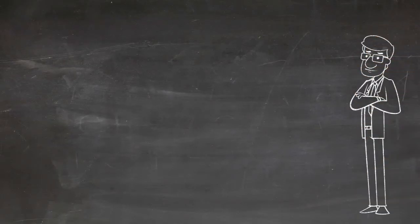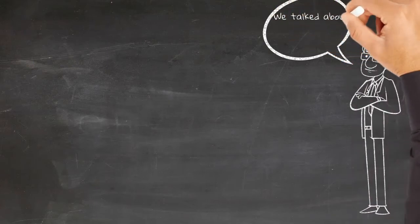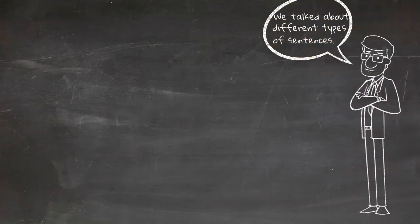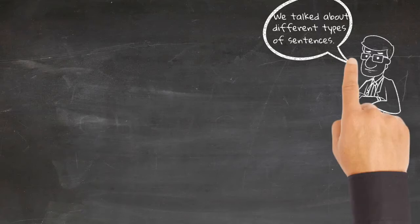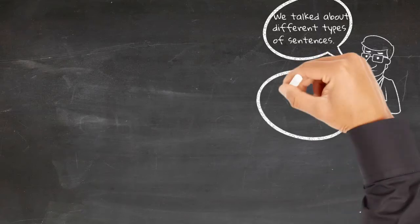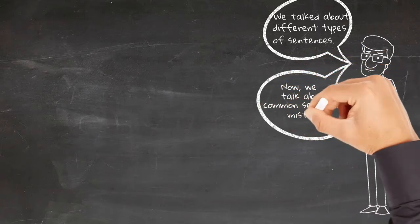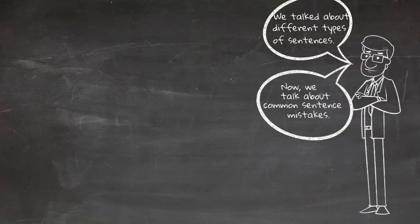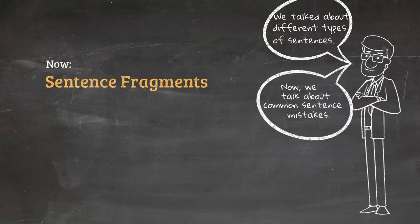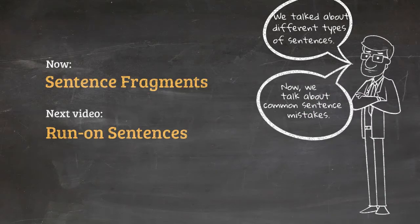Hi again everybody and welcome to English in the Afternoon. In the previous four videos we talked a lot about the different types of sentences that exist in English. In this video and the next one we'll talk about common sentence mistakes. Here we'll talk about sentence fragments, and in the next video we'll talk about run-on sentences.